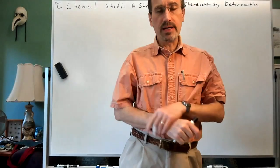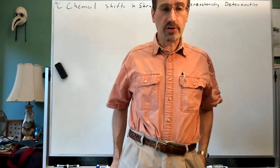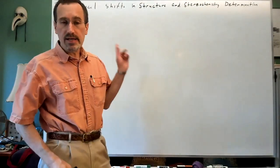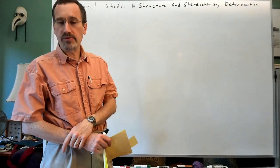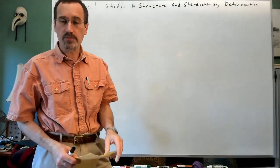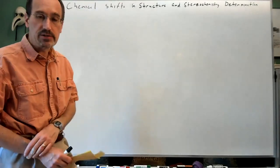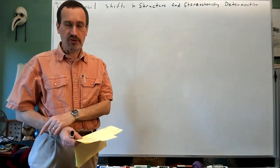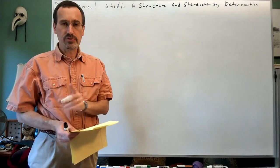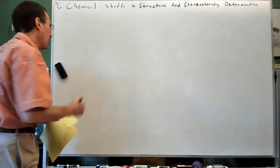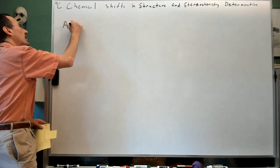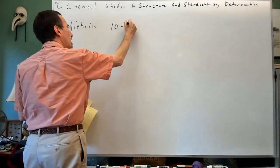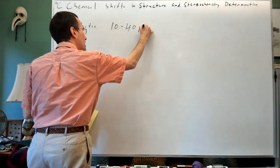The last topic before the midterm, in terms of crystallizing and integrating your knowledge, is to talk more about carbon-13 chemical shifts in NMR spectroscopy and structure and stereochemistry determination. These can be really useful in understanding molecular structure. At the simplest level, aliphatic carbons are about 10 to 40 ppm.